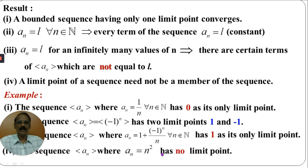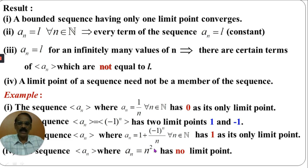The sequence AN where AN equals N² has no limit point. Because as N tends to infinity, N² tends to infinity. Infinity is not a number, and since the limit must be a number, this sequence has no limit point.